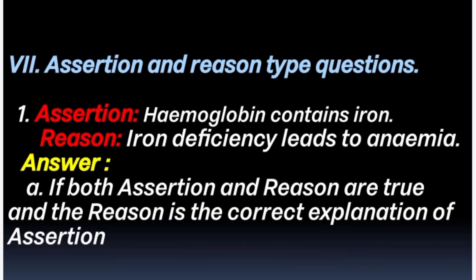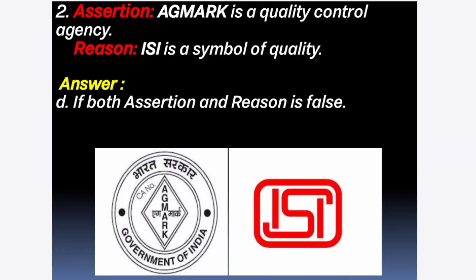7th section: Assertion and Reason type questions. 1st question — Assertion: Hemoglobin contains iron. Reason: Iron deficiency leads to anemia. Answer: option A — both assertion and reason are true, and the reason is the correct explanation of the assertion. 2nd question — Assertion: AGMARK is a quality control agency. Reason: ISI is a symbol of quality. Answer: option D — both assertion and reason are false, because both AGMARK and ISI are food quality control agencies.